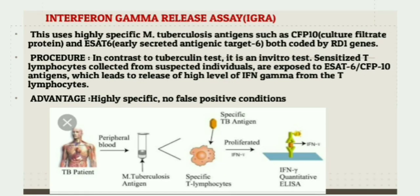The second method for diagnosing latent TB is the interferon gamma release assay (IGRA). This uses highly specific M. tuberculosis antigens: CFP-10 (culture filtrate protein 10) and ESAT-6 (early secreted antigenic target 6), both coded for by RD1 genes. In contrast to the tuberculin test, it is an in vitro test. Sensitized T lymphocytes collected from suspected individuals are exposed to ESAT-6 or CFP-10 antigen, leading to release of high levels of interferon gamma. The QuantiFERON-TB Gold assay is a commercially available ELISA format. The advantage of IGRA is that it is highly specific and will not give false positive results.